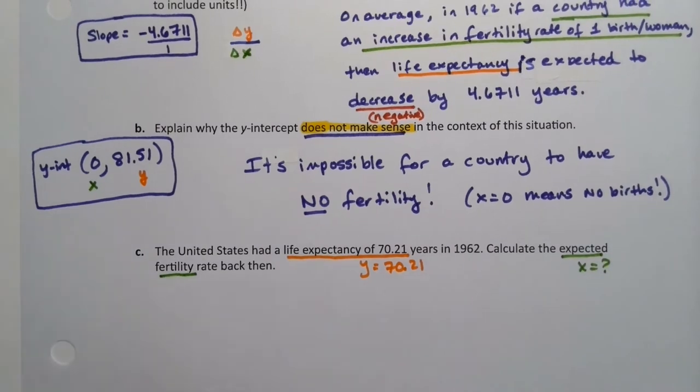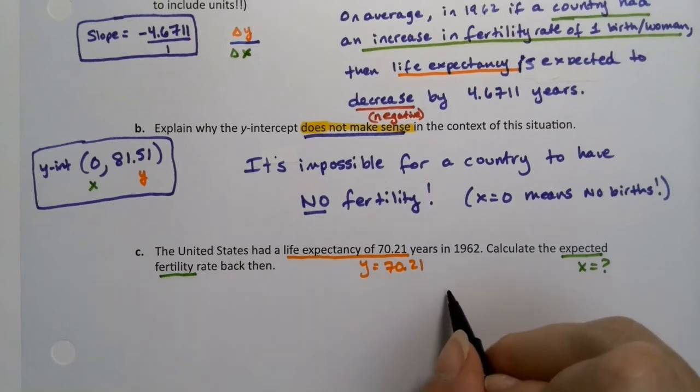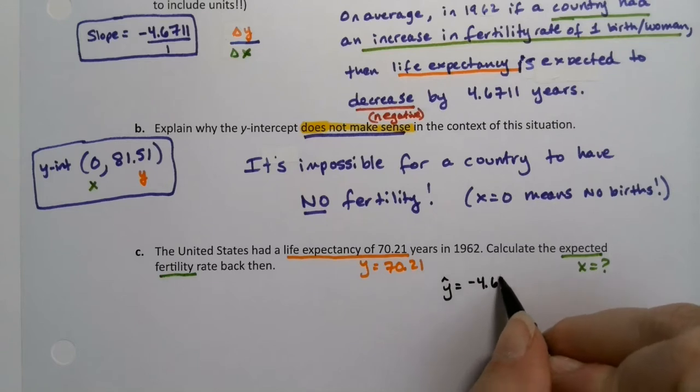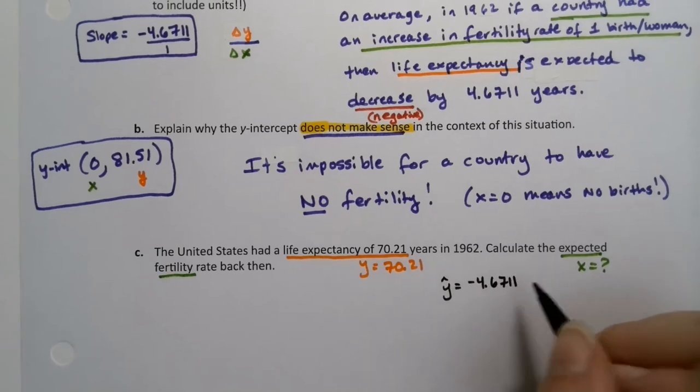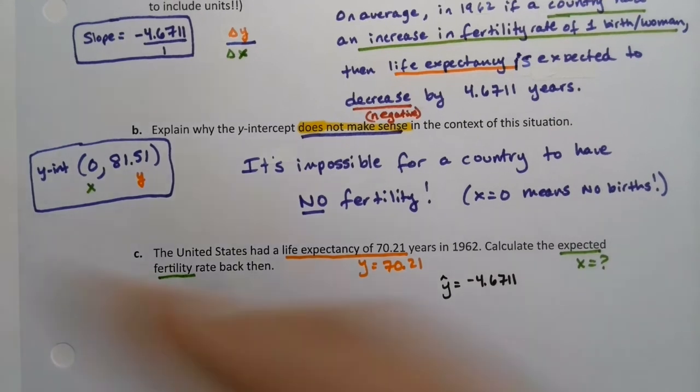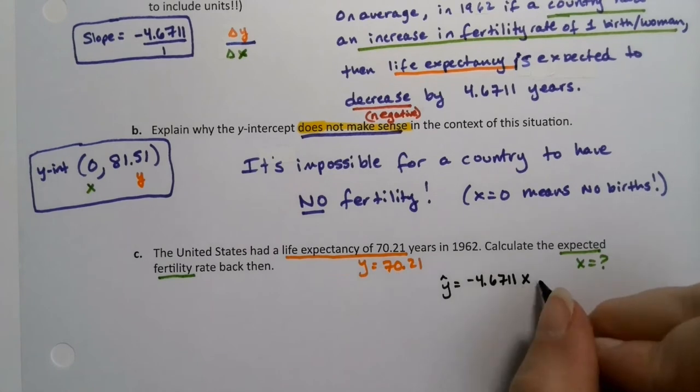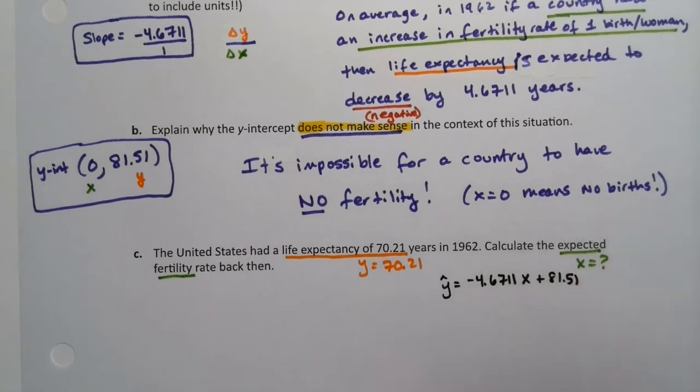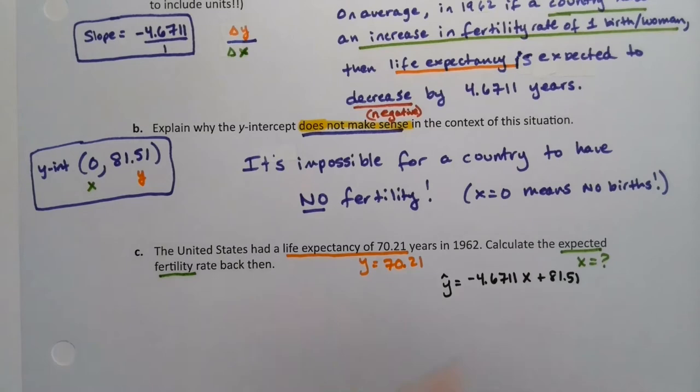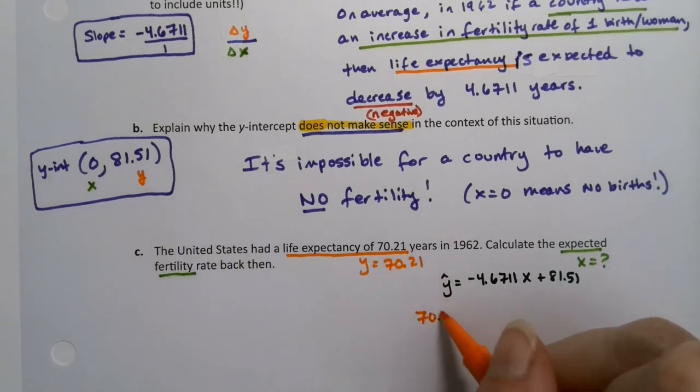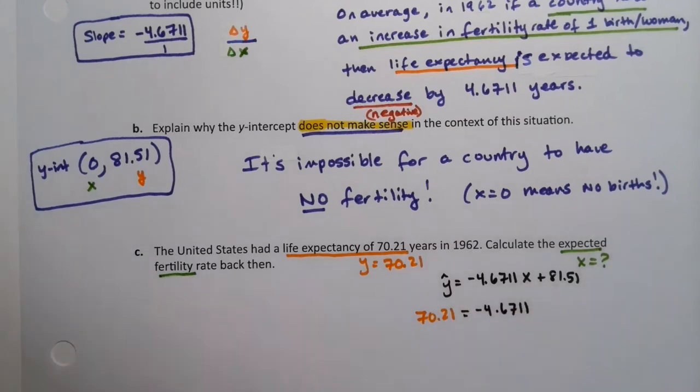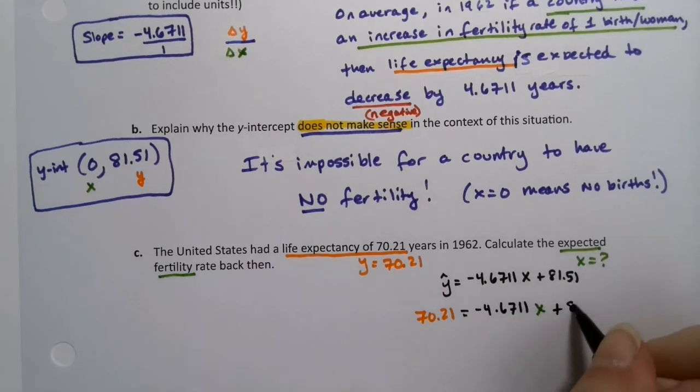So, let's write the equation again. The equation was y hat equals negative 4.6711 x plus 81.51. So, what we're going to do is we're going to set it equal to 70.21, because that's a y value. And we're going to solve it for x. It's a tiny bit of algebra. Just a very little bit.